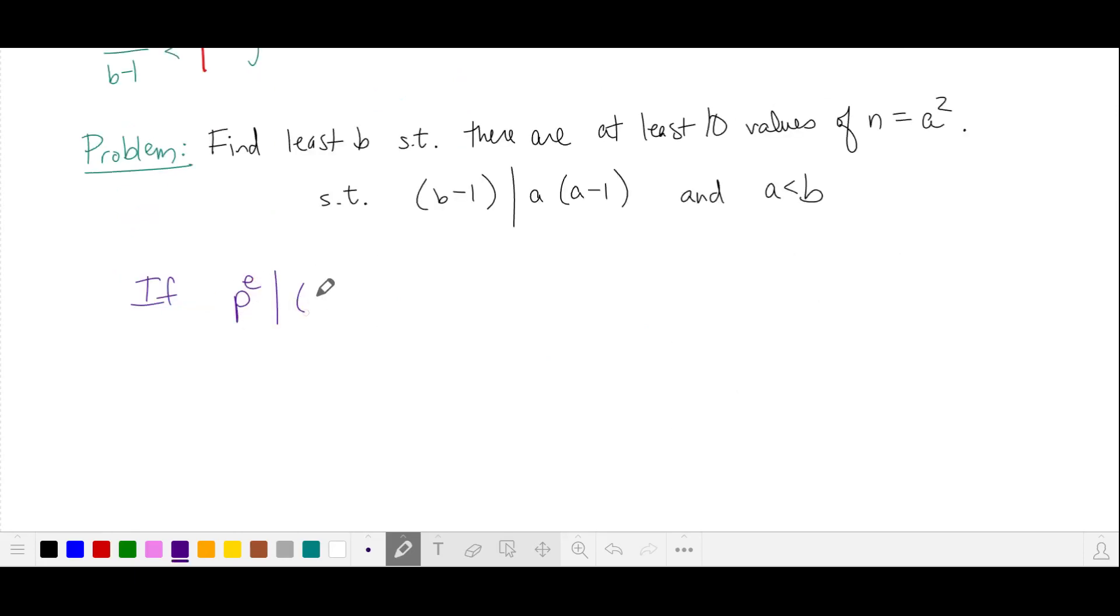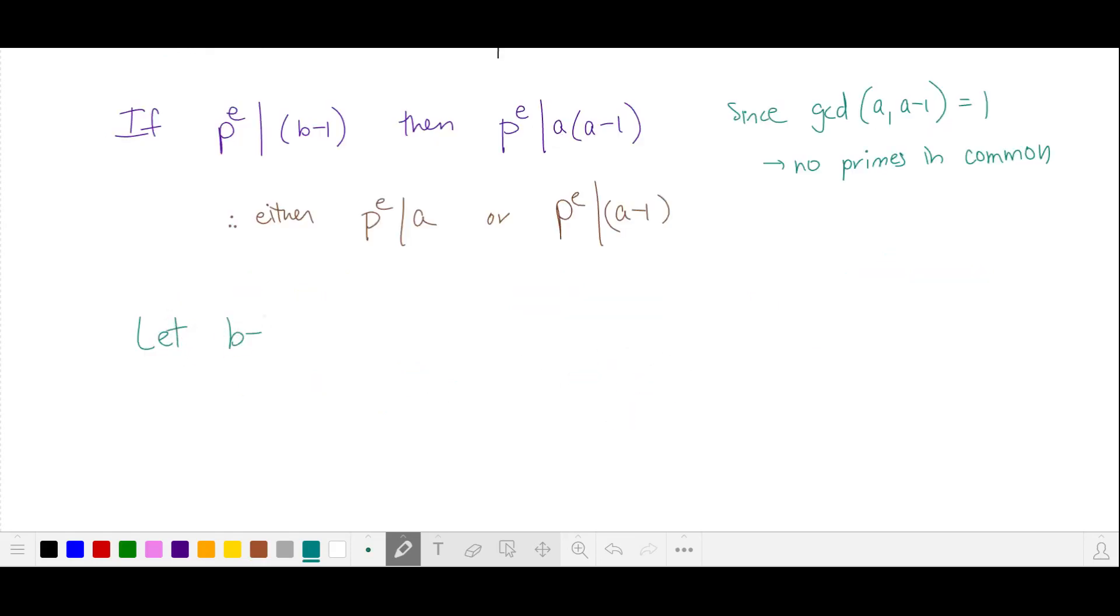So if we have some prime that divides b minus 1, then this prime is also going to divide the numerator a times a minus 1. But the gcd of two consecutive numbers is 1, meaning they have no primes in common. Since they have no primes in common, then these primes either divide a or they divide a minus 1. So let's let b minus 1 be the product of two numbers, x and y, such that these two factors share no primes in common. This means that the primes that divide into a all of them will come from one factor or the other.